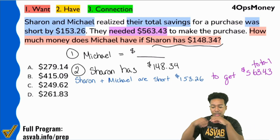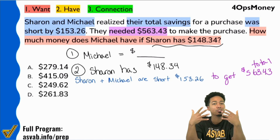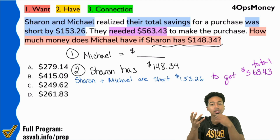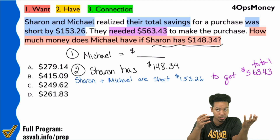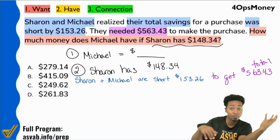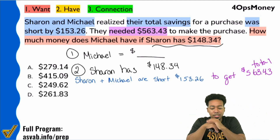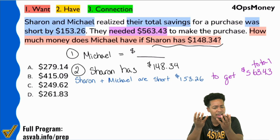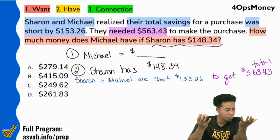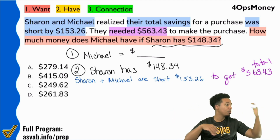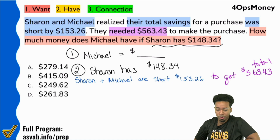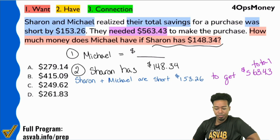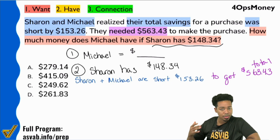Is that a fair statement? Sharon, Michael, and the extra $153 that they're missing — together, that would make up the total that they need. The amount of money Sharon and Michael have, plus that $150, together would be what they need — that total. We just need to play through that logic.